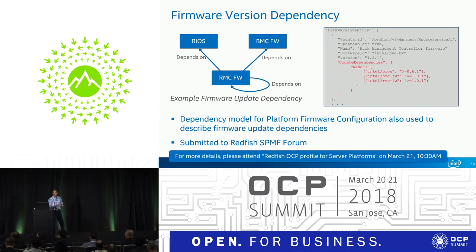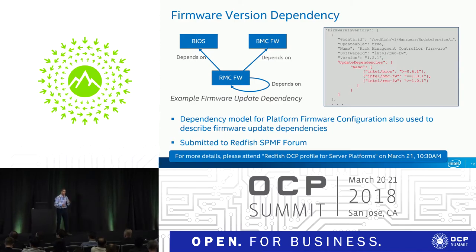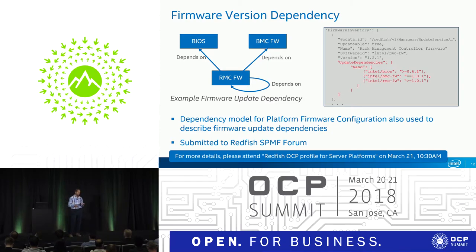So we created a dependency model. It essentially says: these are my update dependencies, and it will not apply the update unless certain conditions are met — for example, BIOS has to be greater than a certain version, BMC greater than a different version, and the RMC (rack management controller) at a specific version. This schema has been contributed into Redfish as of last week. There is a specific session on Redfish OCP profiles tomorrow from John Leung at 10:30.